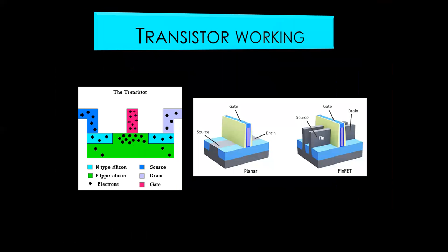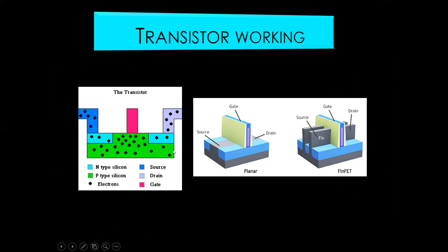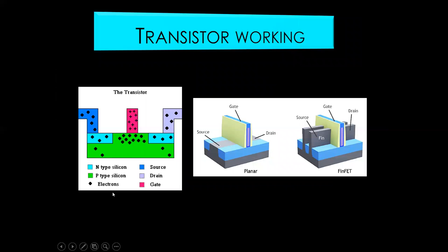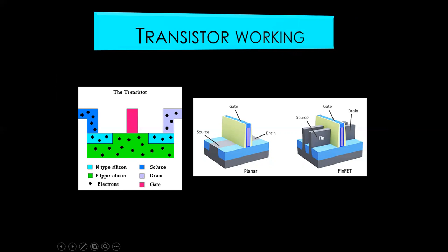Now here is a video which describes how a transistor works. On the left side of the visualization, you can see a video describing how it works, and on the right side you will see a picture of it. Blue represents N-type silicon, green represents P-type silicon, black dots are electrons, dark blue is the source, purple is the drain, and red or pink is the gate.